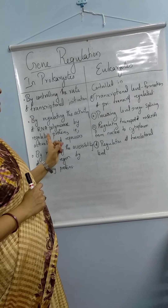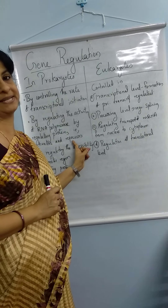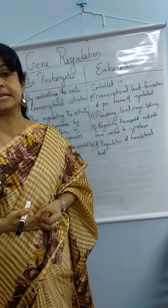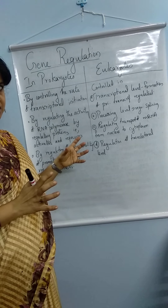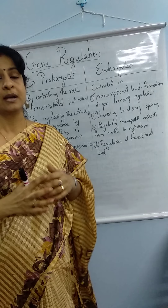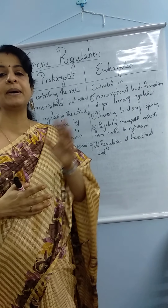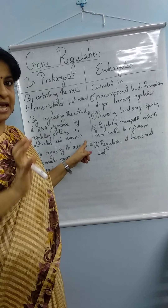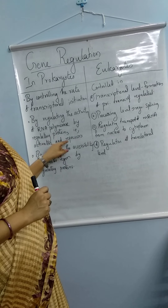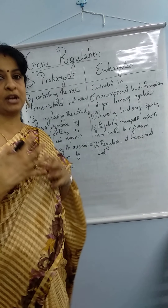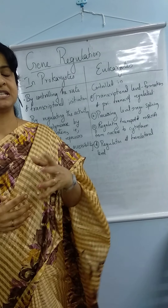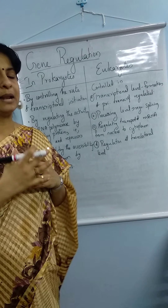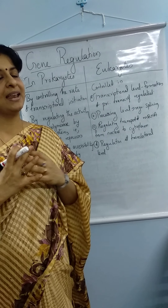Another way is by regulating the activity of RNA polymerase by regulatory proteins called activators and repressors. RNA polymerase is the main enzyme needed for the process of transcription. Activators will help to start the process, while repressors will stop the process — they will not allow the RNA polymerase to bind to the promoter region.